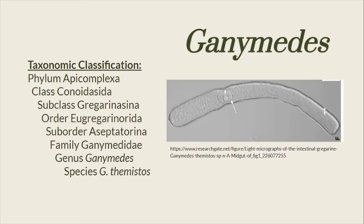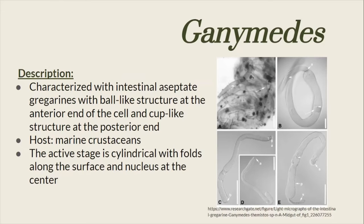Here is the taxonomic classification for the genus Ganymedes. The genus Ganymedes are characterized as intestinal aseptate gregarines with a ball-like structure at the anterior end of the cell and a cup-like structure at the posterior end. Its usual hosts are the marine crustaceans. The active stage is cylindrical with folds along the surface and nucleus at the center.